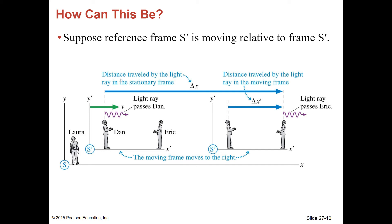You have a light ray that passes Dan. The light ray passes Dan, then the light ray passes Eric. Between Dan and Eric in this moving reference frame, it looks like the distance traveled by the light ray in this moving frame is delta X prime.